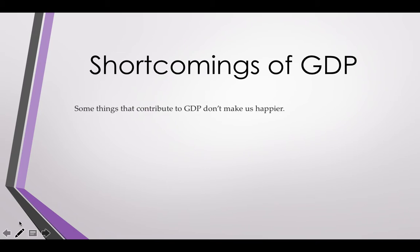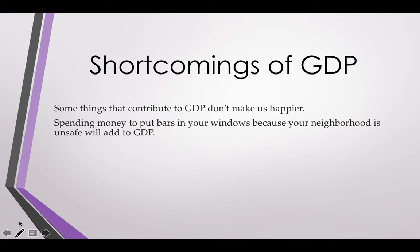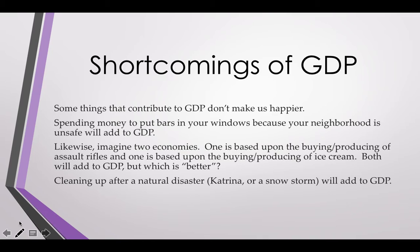Some things included in GDP actually don't make us happy. For example, having to put bars on your windows in a bad neighborhood contributes to GDP but isn't desirable. Consider one economy based on producing assault rifles and another buying and selling ice cream — both add to GDP equally. And think about Hurricane Katrina: we didn't want the cleanup, yet spending money on it added to our GDP. Sometimes we're doing things that aren't so great, but it makes us look good in terms of GDP.